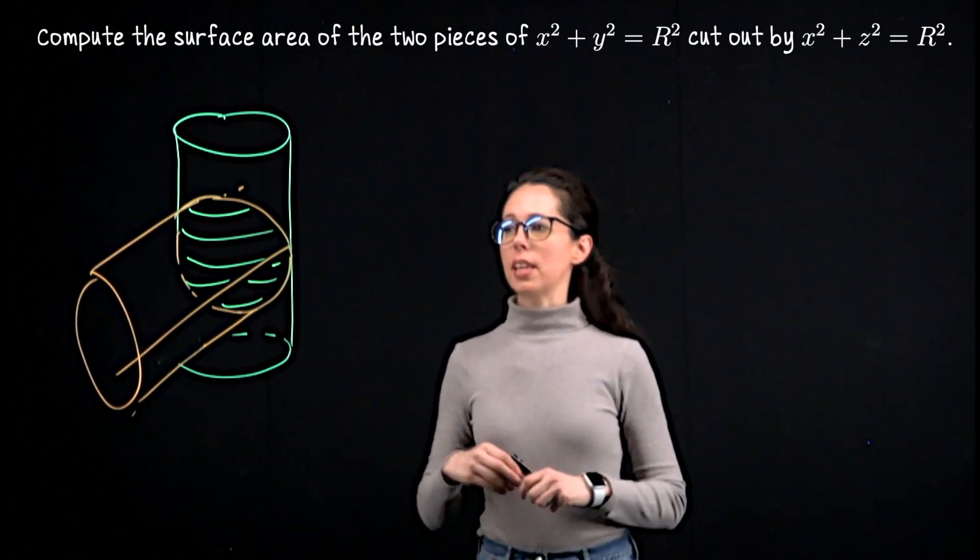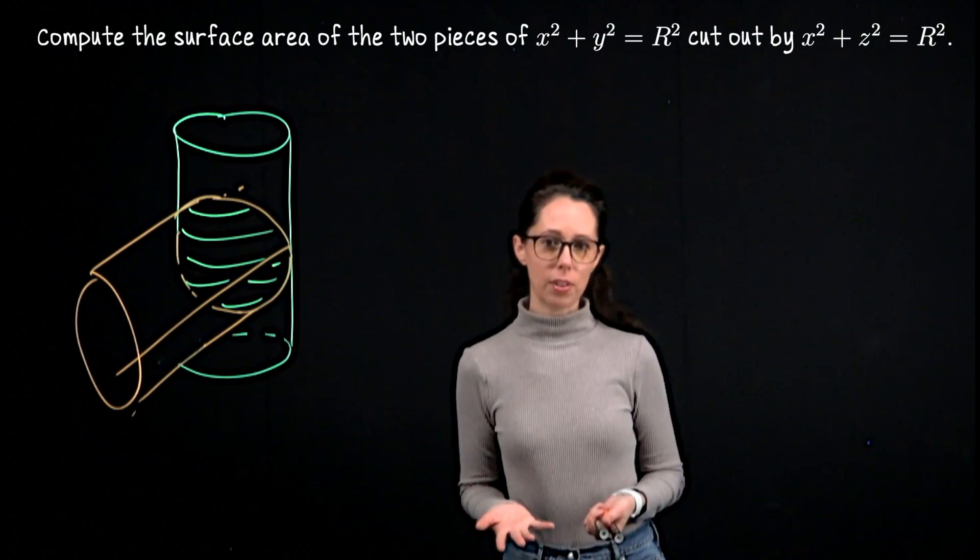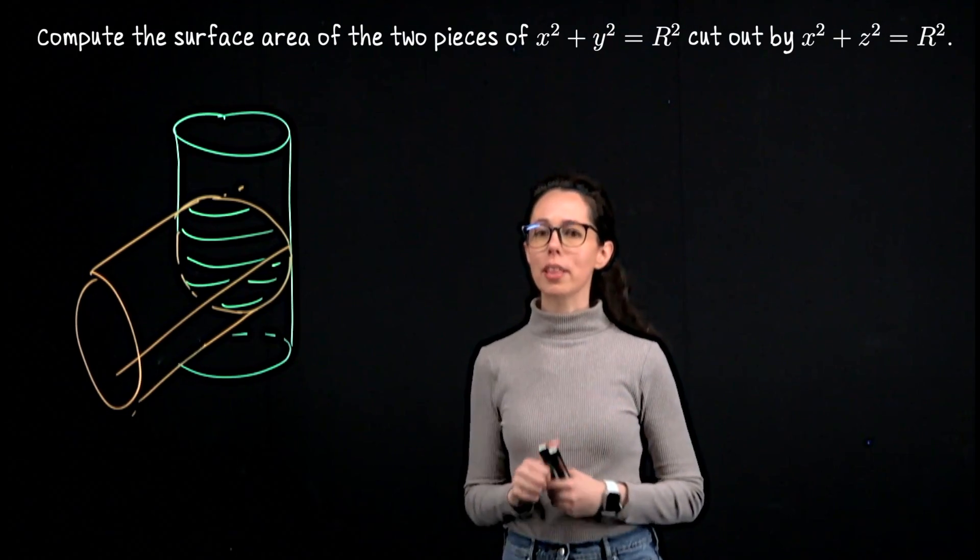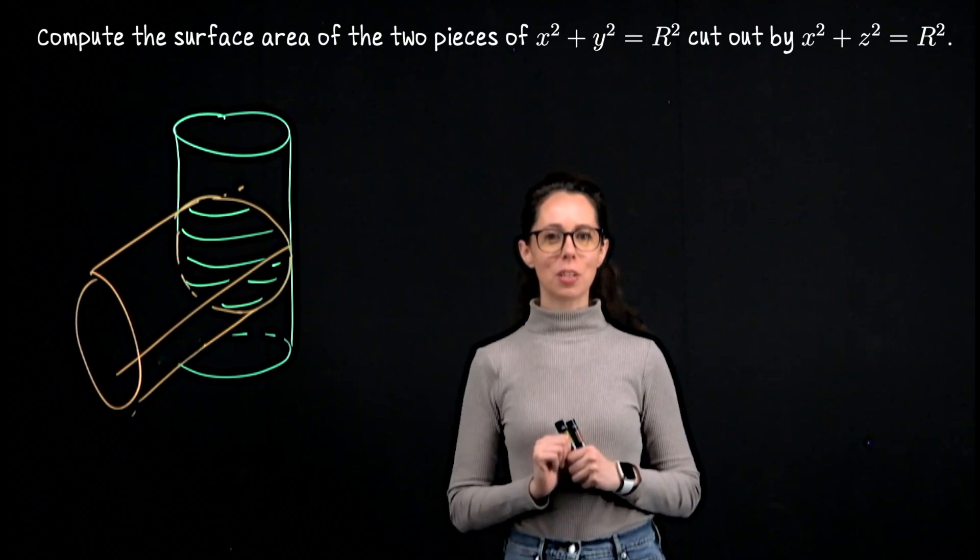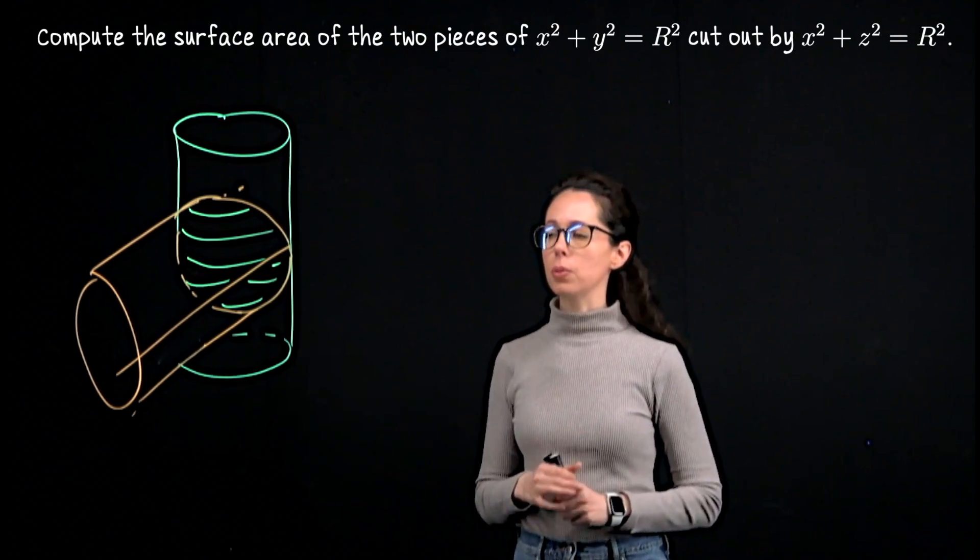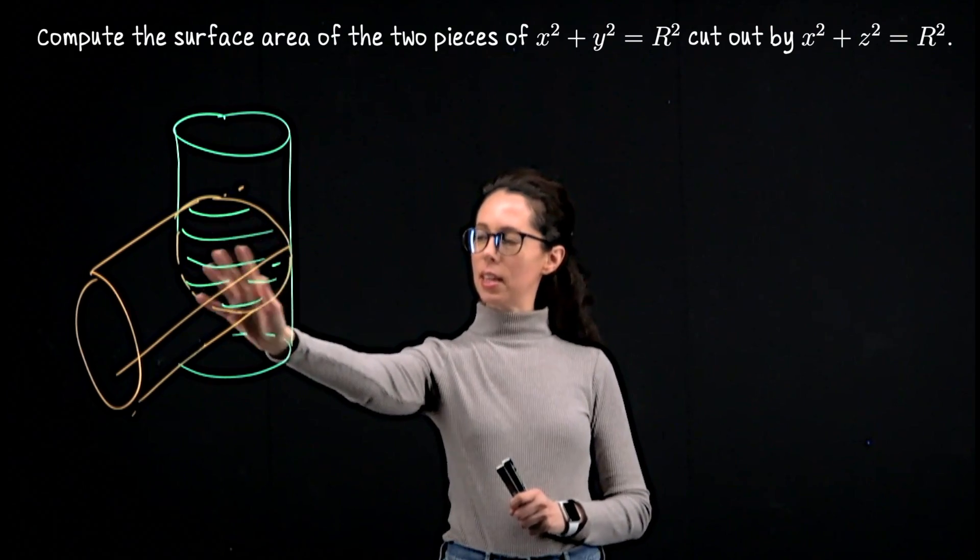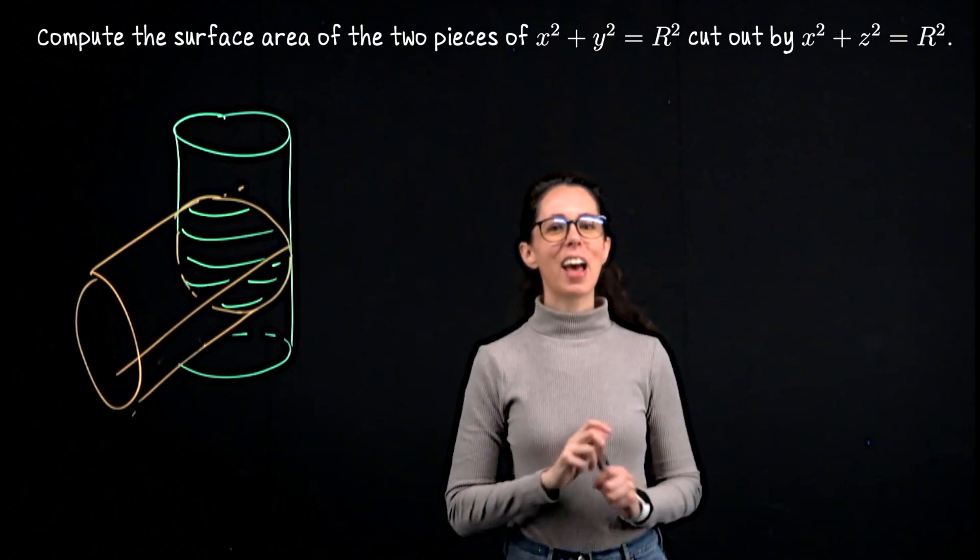They're going to intersect in two separate regions, which enclose the same amount of surface area. So we will just do one computation and then double it. That's the first observation to make. We only need to compute one of the two cylindrical faces here, compute that area and then double it.